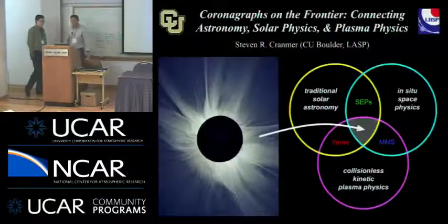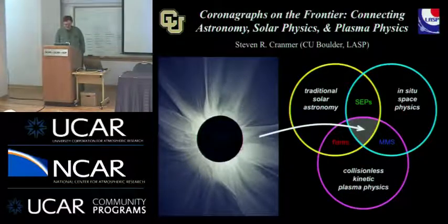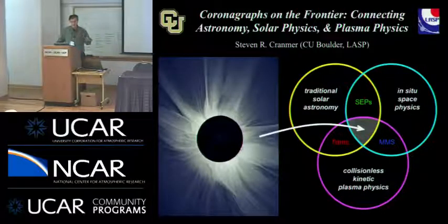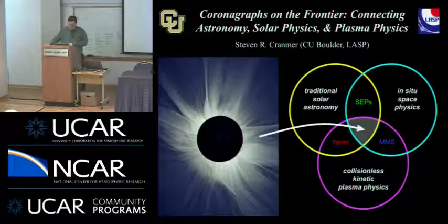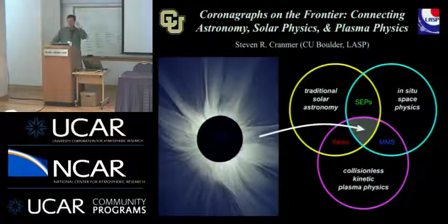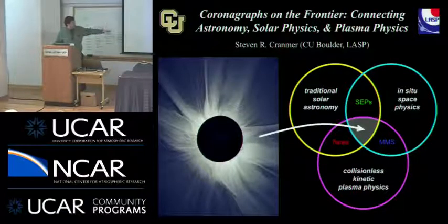Steve Cranmer from CU. I'm roughly three-quarters theorist and one-quarter someone who deals with observational data. I'm wedged in between Dana's talk about surface magnetic field and Enrico's talk on thermal properties of the corona. The way to bridge that gap is to observe the outer solar atmosphere off to the side with something like a coronagraph — essentially an artificial eclipse.